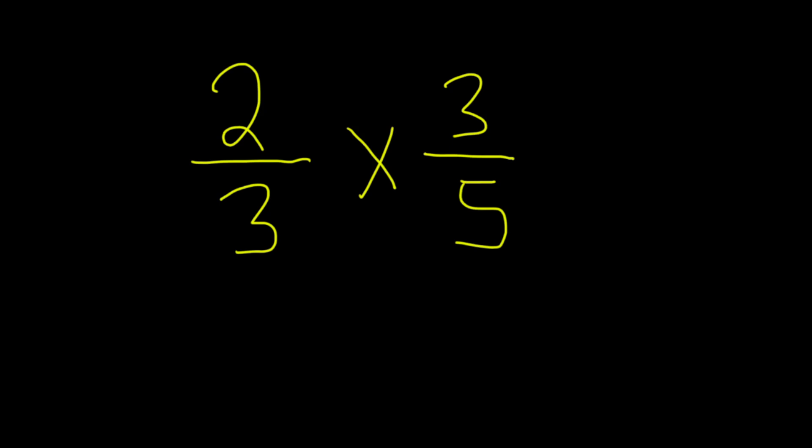There are several ways to multiply these two fractions. We have 2 over 3 times 3 over 5. There's a bunch of different ways to think about it. There's a couple different ways to do it. Let's do it two different ways.